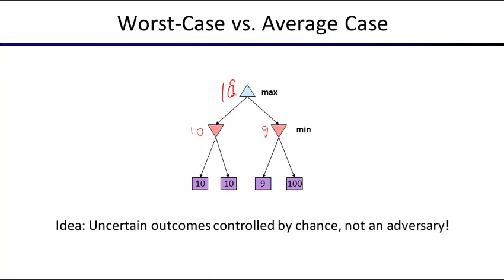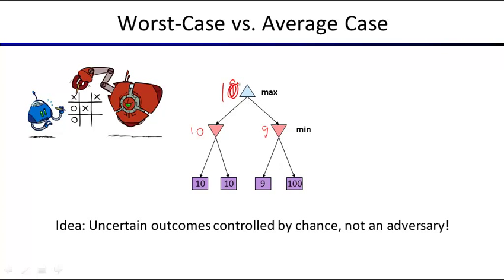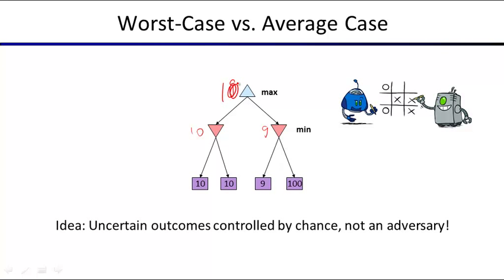The maximizer chooses right, and this is probably the right outcome if you play against a very mechanical system that always makes the right choice. But in the real world, people make mistakes. You could be playing against a robot that looks dumb, and in that case maybe going left is the right thing, because if they were to make a mistake, you get 100, which is really high, and 9 is only a little bit less than 10. So you might want to take your chances and go left.